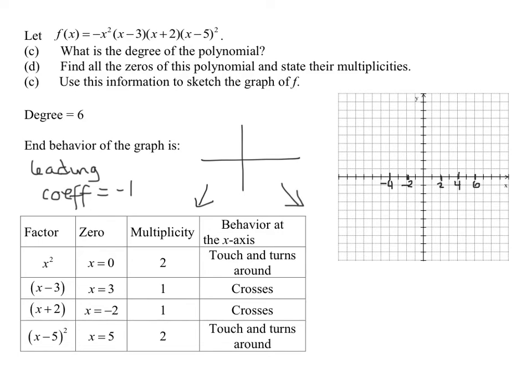So my zeros are x equals 0, x equals 3, x equals negative 2, and x equals 5. So there are my four zeros.